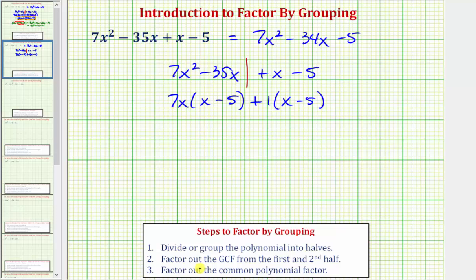Step three, we factor out the common polynomial factor. So whenever applying the factor by grouping technique, these products should always have a common polynomial factor, or in this case, a common binomial factor of x minus five.